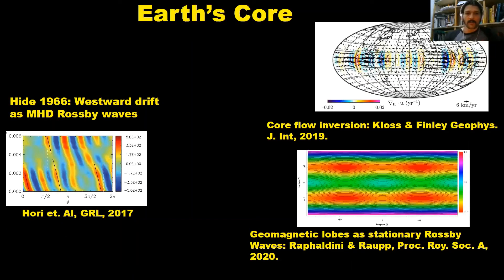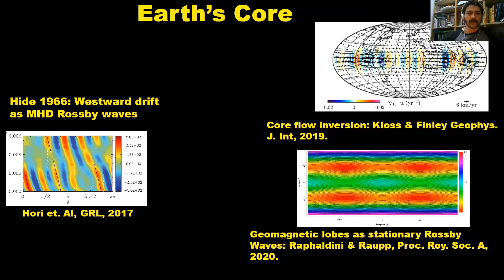In Earth's core, Rossby waves are thought to be responsible for the westward drift of the geomagnetic field. This was suggested by Raymond Hyde in 1966. Several works have been pointing out the importance of the dynamics of Rossby waves for the geomagnetic field. In particular, core flow inversions have been showing vertical flow patterns that propagate in Earth's core that can be associated with Rossby waves.